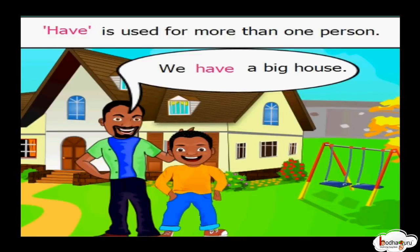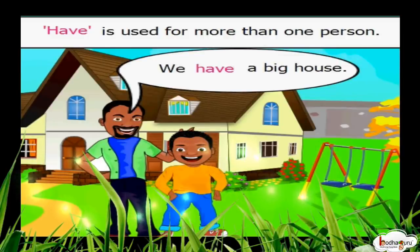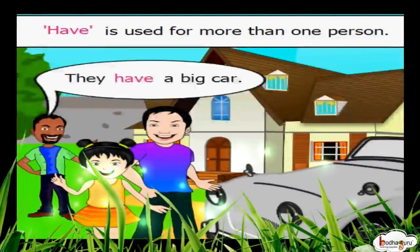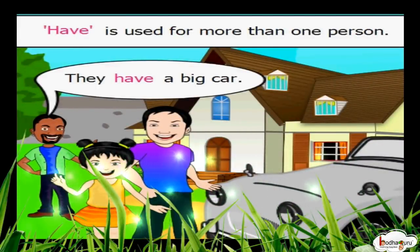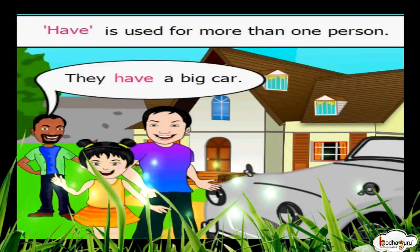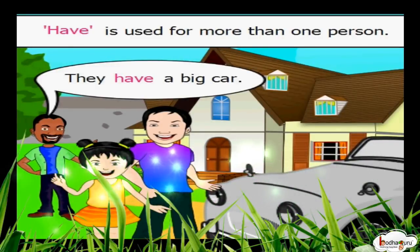We have a big house. When we are talking about many persons, or many animals, or many places, or many things, we use 'have'. For example, we have a big house. They have a big pool. We don't use 'has' after a plural noun or pronoun. They have a big car. We use 'have' with plural noun or pronoun. 'They' means more than one person, so we put 'have' after 'they'.